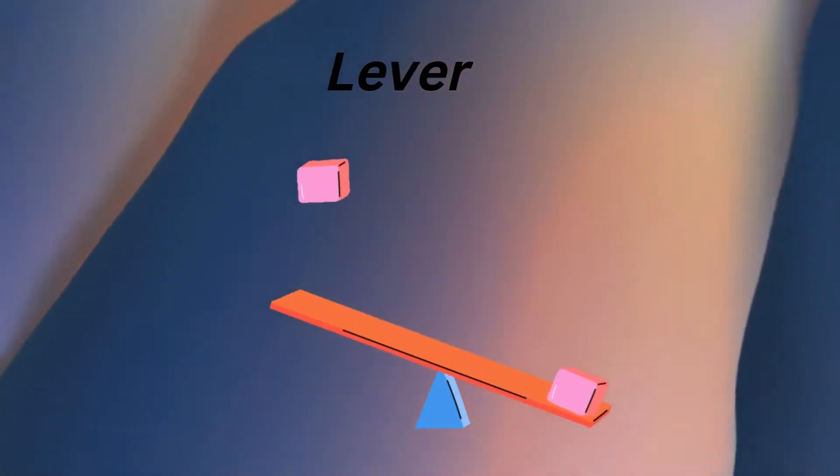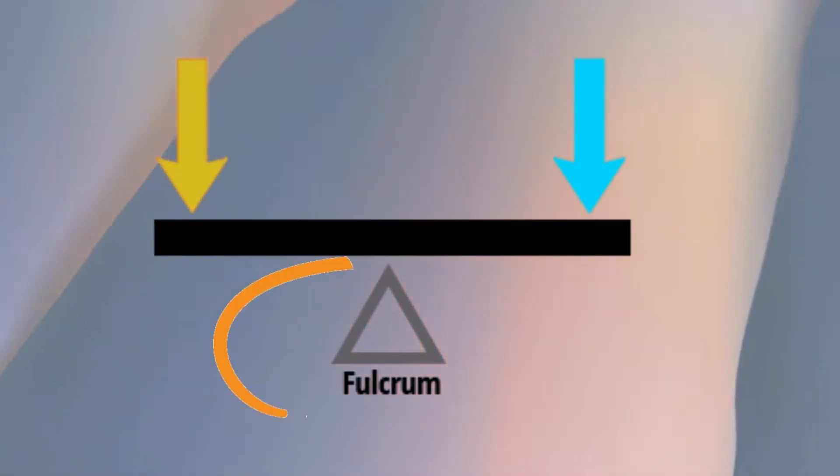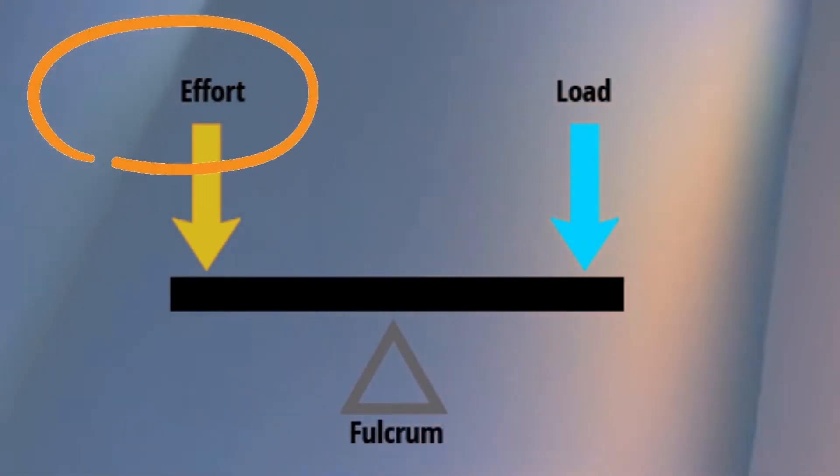Let's explore the lever. A lever is a rigid bar that moves about a point called fulcrum. It is used to raise or lower a heavy body. Components of a lever include effort, load, and fulcrum.